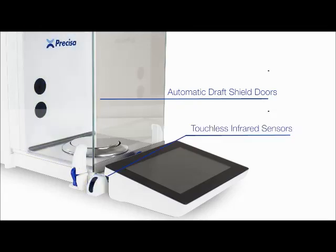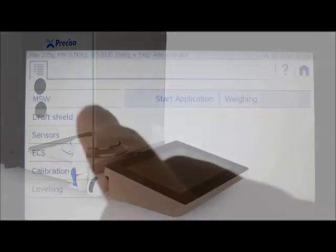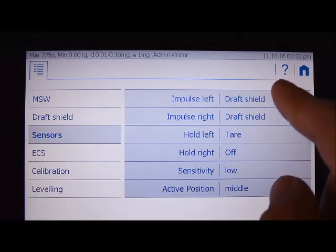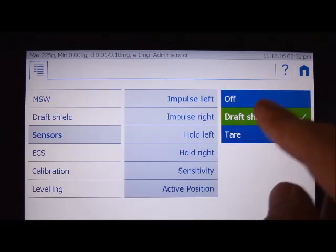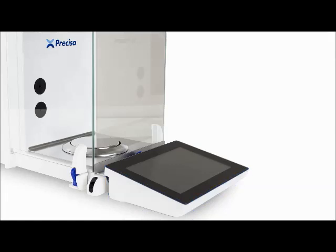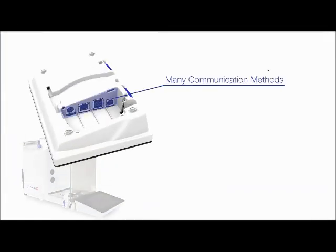It is equipped with automatic draft shield doors that are controlled by touchless infrared sensors on the sides. The sensitivity of the sensors can be changed to the settings on the tablet, and the function of each individual sensor can also be changed to tare or zero with a wave or a hold of the hand.